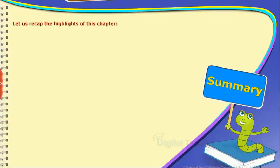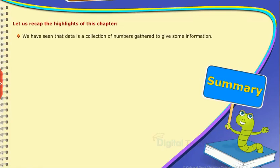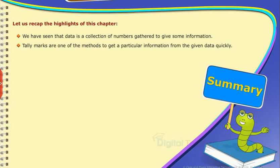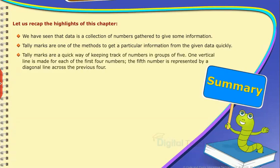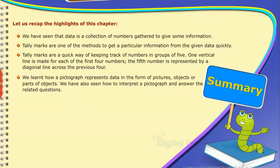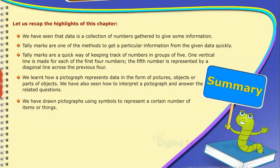Summary — let us recap the highlights of this chapter. Data is a collection of numbers gathered to give some information. Tally marks are one of the methods to get particular information from the given data quickly, keeping track of numbers in groups of 5. One vertical line is made for each of the first 4 numbers; the 5th is represented by a diagonal line across the previous 4. We also learnt how a pictograph represents data in the form of pictures or objects, how to interpret a pictograph, and how to draw pictographs using symbols to represent a certain number of items.